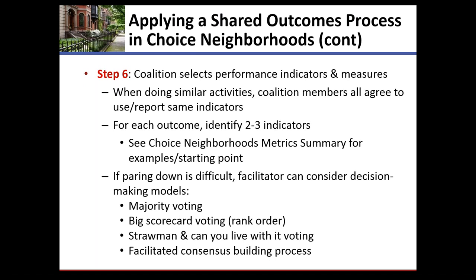One thing heard from implementation grantees and planning grantees is the difficulty in sorting among all the possible outcome measures and indicators — there often are too many, people have their favorites, and it's difficult to narrow down to three to five outcomes each with two to three indicators. You can end up with a very long list, which makes the outcome process much more difficult.